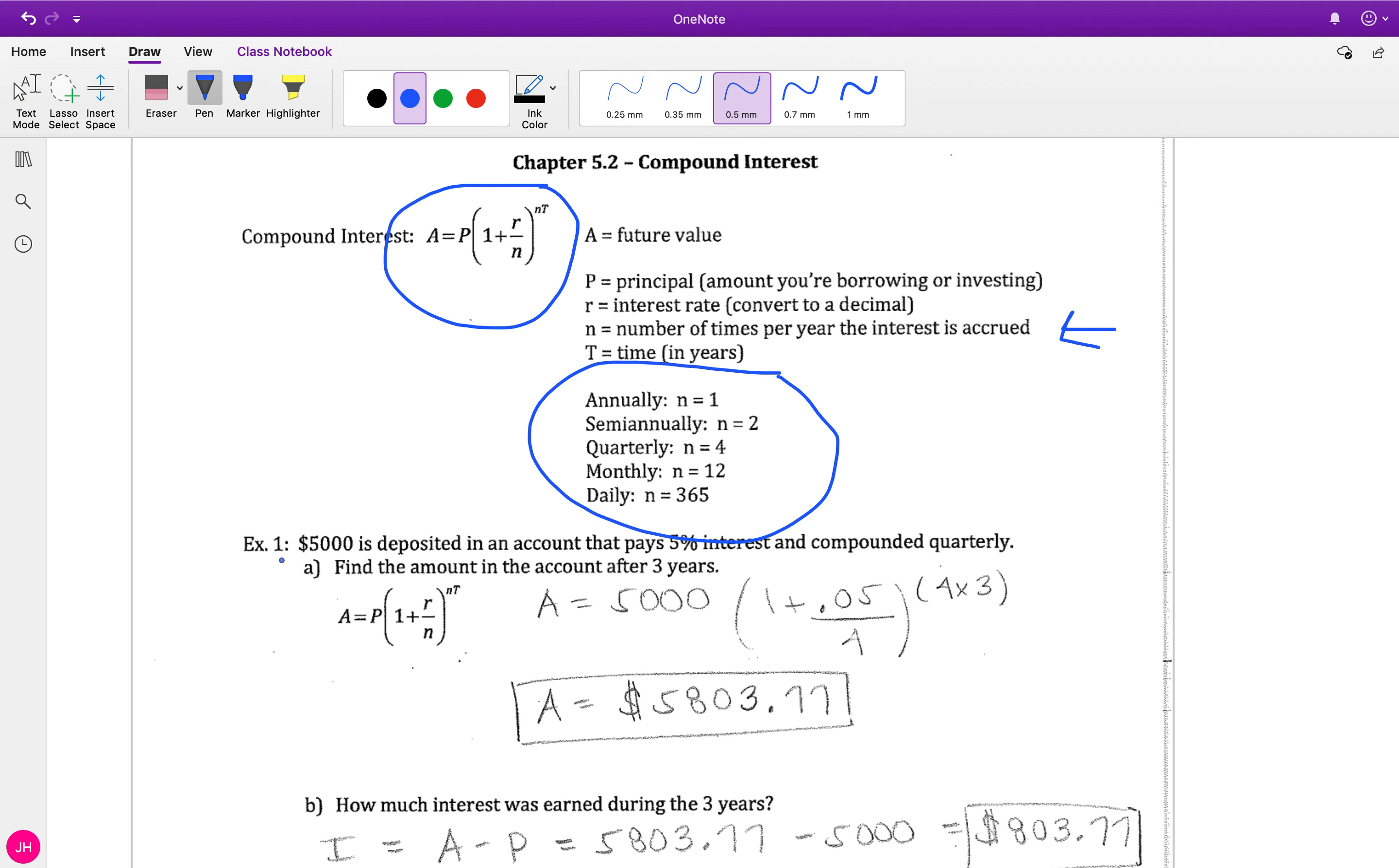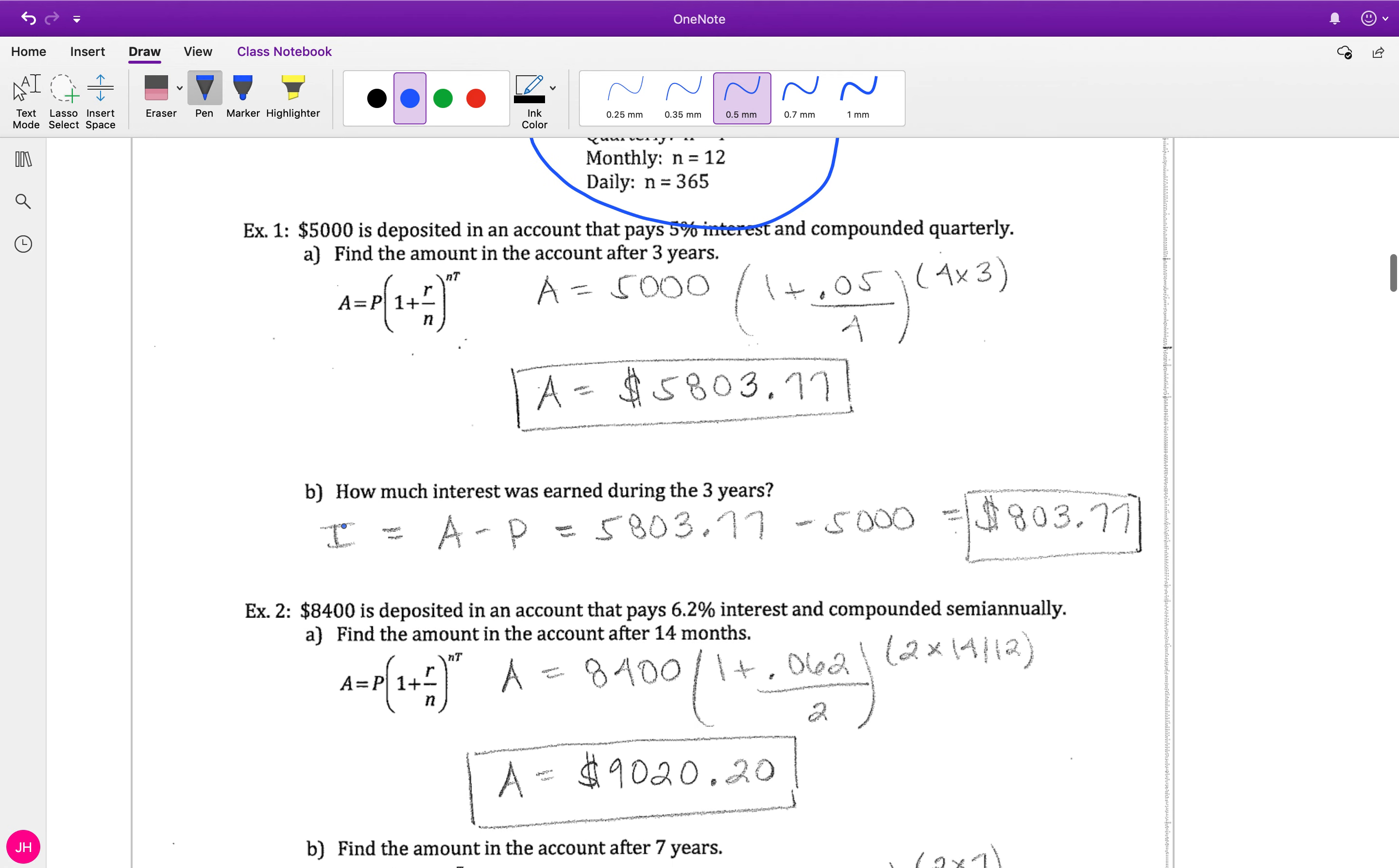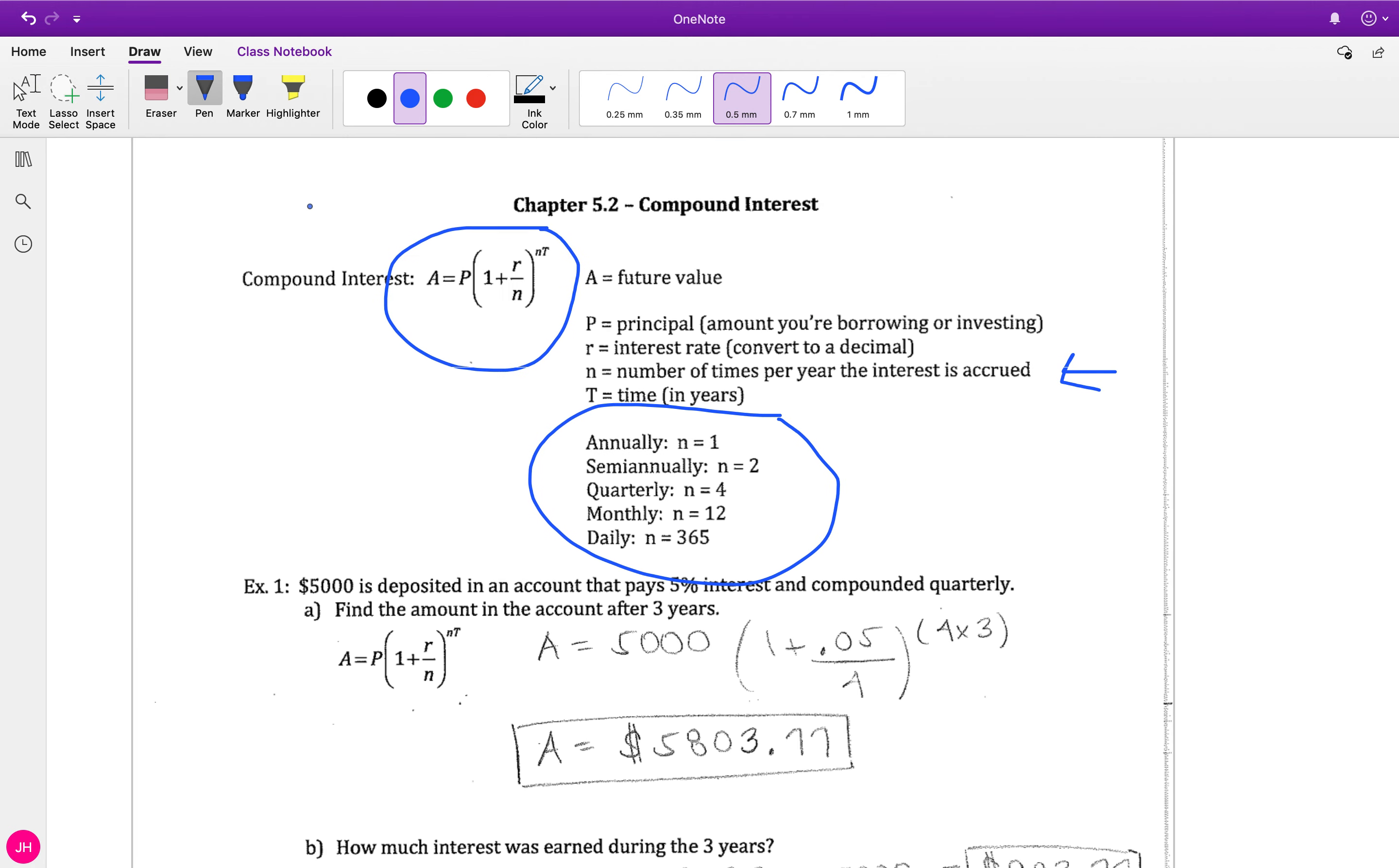Here's our first example: we're depositing to an account that pays interest and it's compounded accordingly. Now you might be asking yourself why are we using a different formula than we did before? The last one was simple interest, so our interest was calculated right at the beginning and wasn't calculated again - it was set at the beginning.